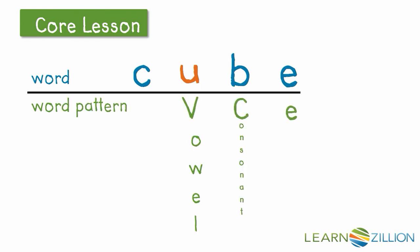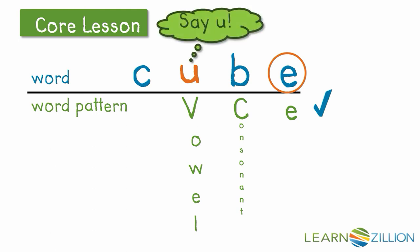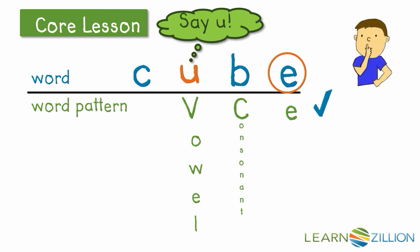V-C-E. I know that the vowel u is going to say its name "u" when I read the word because of that bossy e. But then I have to remember to keep the e silent. Let's read the word: c-u-b-e. Cube. Cube is the word. I kept the e silent.